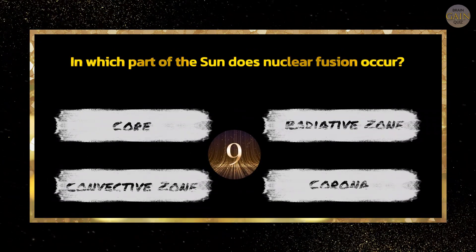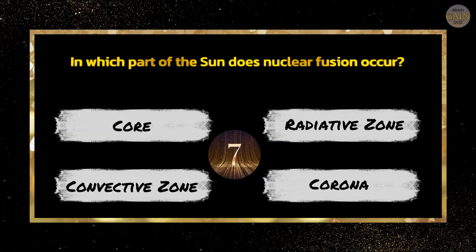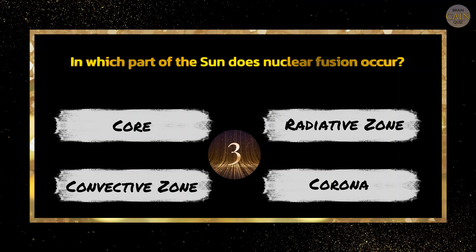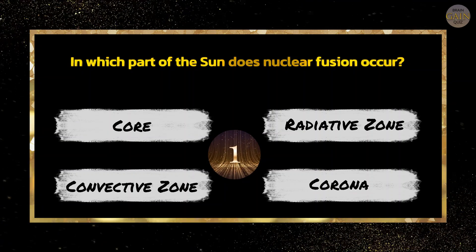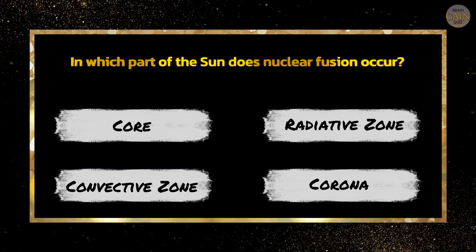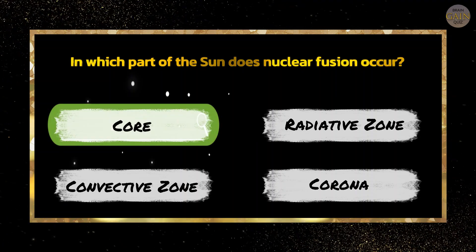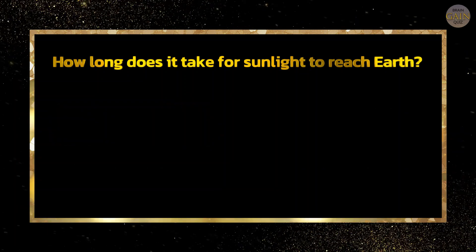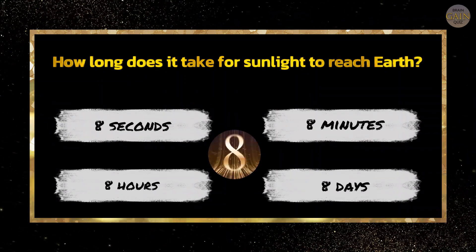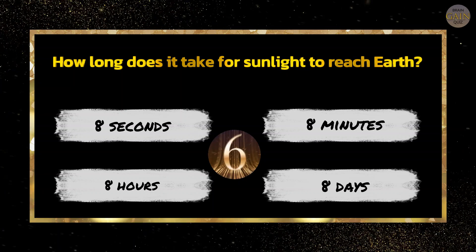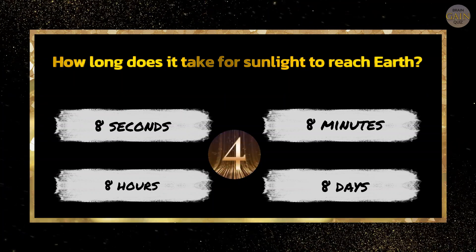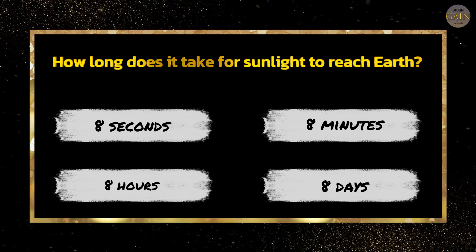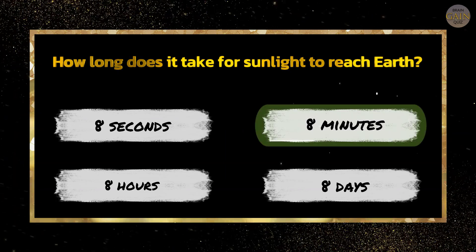In which part of the Sun does nuclear fusion occur? Core. How long does it take for sunlight to reach Earth? 8 minutes.